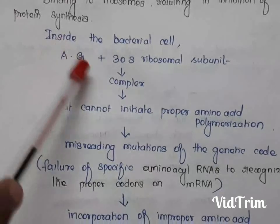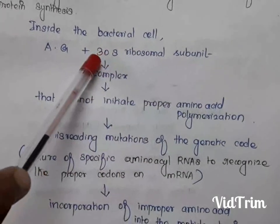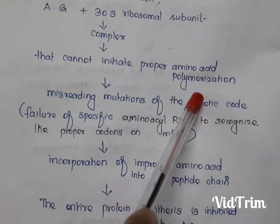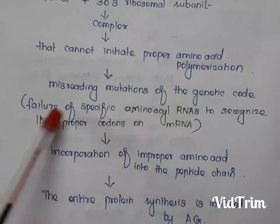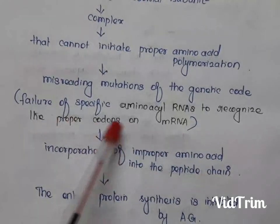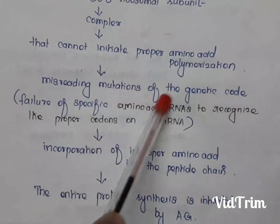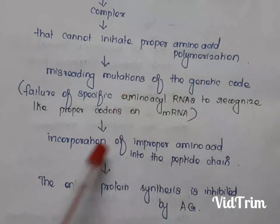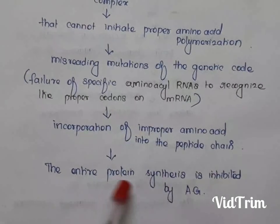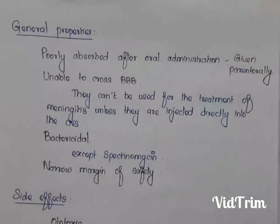Inside the bacterial cell, aminoglycosides bind to the 30S ribosomal subunit, forming a complex. This complex cannot initiate proper amino acid polymerization and leads to failure of specific aminoacyl-tRNAs to recognize the proper codons on mRNA, causing misreading mutations of the genetic code. This causes incorporation of improper amino acids into the peptide chain, and ultimately the entire protein synthesis is inhibited.